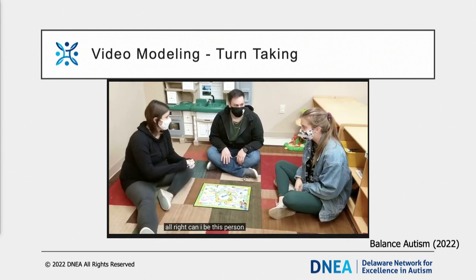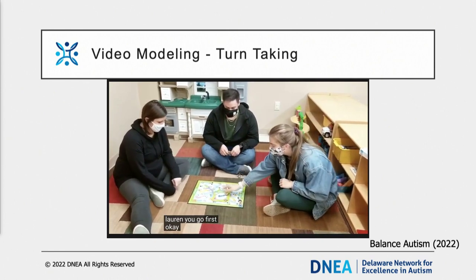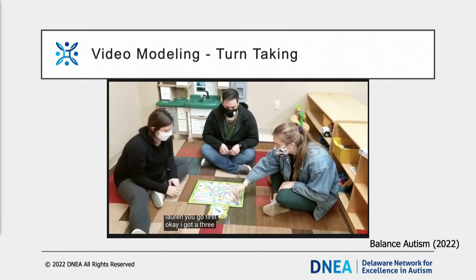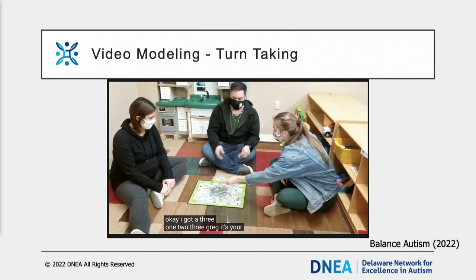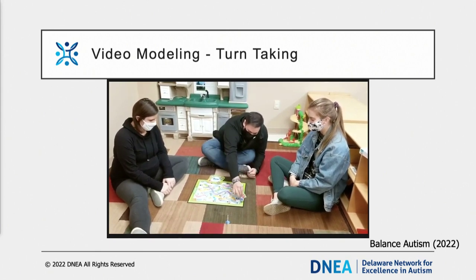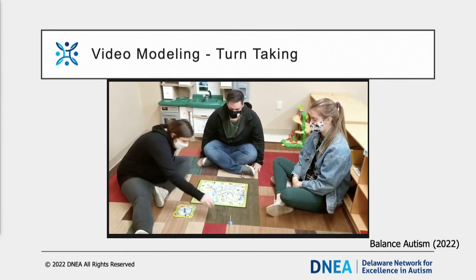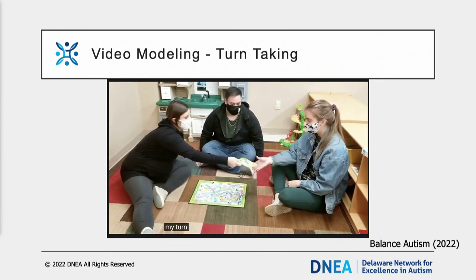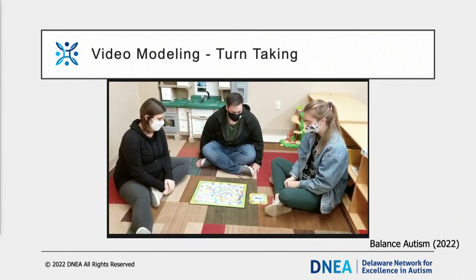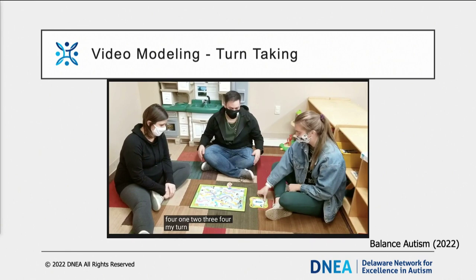Here is a video that models turn-taking during gameplay. This video shows children playing a game, alternating turns by rolling dice and counting moves, with each player saying 'my turn' and 'your turn' to signal the change. If this were a target social skill for one of your students, it is important to show them the video before they engage in the gameplay and verbally prompt the skills during the game. Since this involves other peers, it is also important to show peers the video to help ensure appropriate modeling during play. Remember to provide reinforcement when the student engages in the target behavior and provide multiple opportunities to practice.